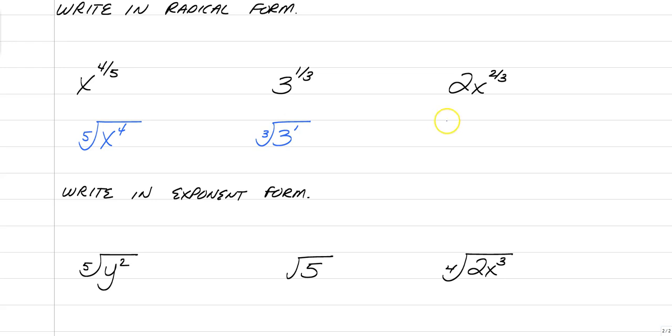And 2x to the 2 thirds would be 2 cube root of x squared. I know what you're thinking. Why isn't the 2 inside? There's no parentheses here. So if there's no parentheses, the 2 and x to the 2 thirds are separate. So the 2 thirds is only being applied to the x.